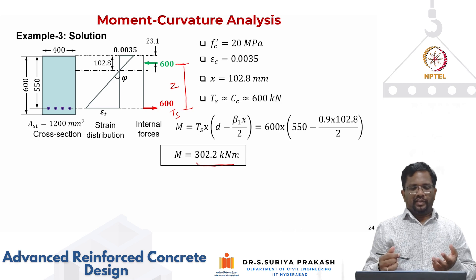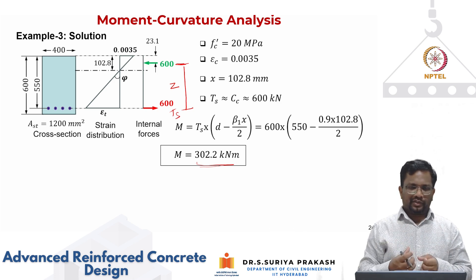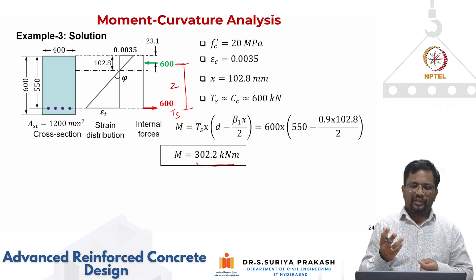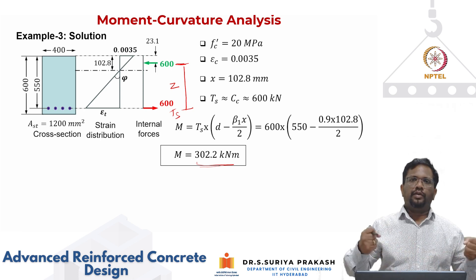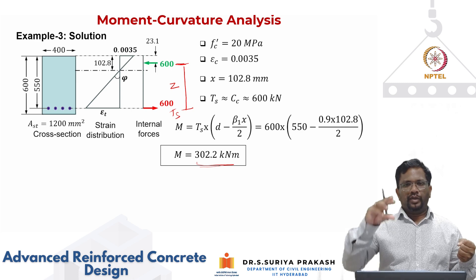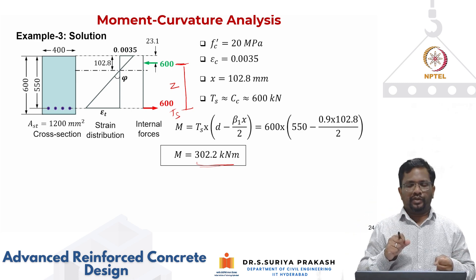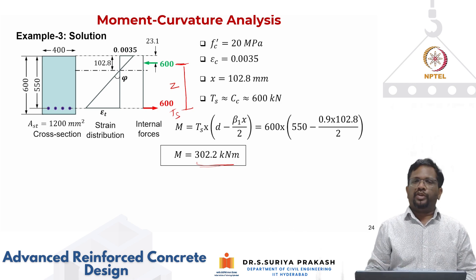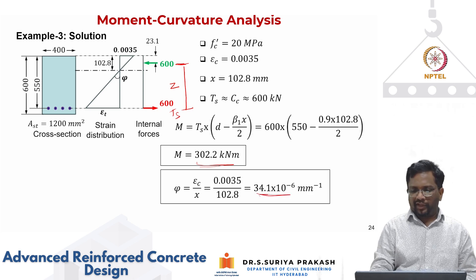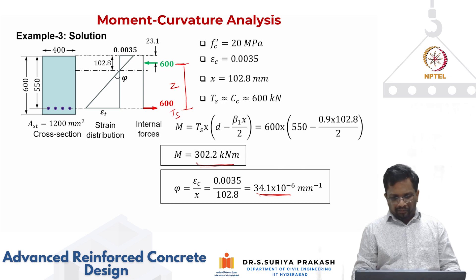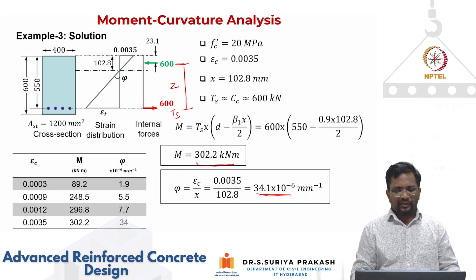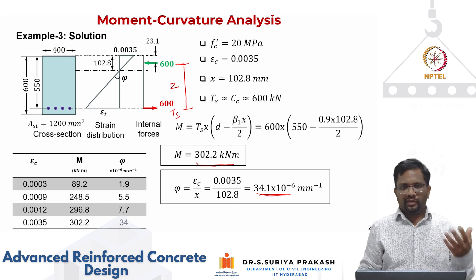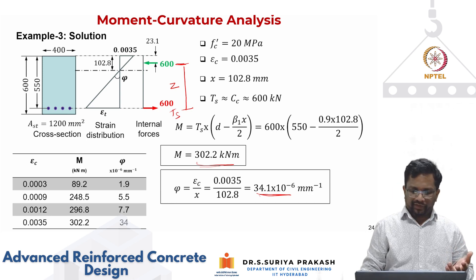For a heavily under-reinforced section with a very low steel amount of half a percentage — where the balanced steel ratio is about 3.2% — the failure is governed by steel yielding in tension. By changing the concrete compression properties, the behavior does not really change much. We still get an ultimate moment resistance of about 302–303 kNm. There is some reduction in curvature of course, going to 34.1, but in terms of moment resistance there is no significant difference.